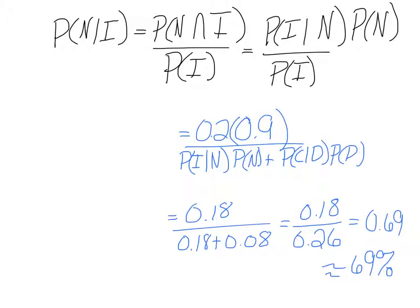On bottom we have the probability that you are incorrect given they're natural times natural, and then the opposite case - the probability that you're correct given it's dyed times the probability of it being dyed. On the left hand side we get that same answer as we got on top, and then we have to add to it the opposite case when you are correct.